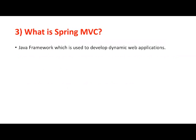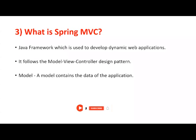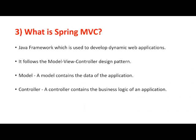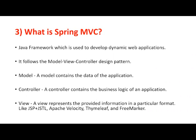Question number three: what is Spring MVC? Spring MVC is given by a Java framework. It is used to implement dynamic web applications that follow Model, View, and Controller. Model indicates data — it can be a single object or a collection of objects, and it is shared between view and controller. Controller is a class that contains business logic — we can also call it request processing code. View is the final representation given to end customers or client machines — it can be JSP with JSTL, Apache Velocity, Thymeleaf, FreeMarker, and so on.